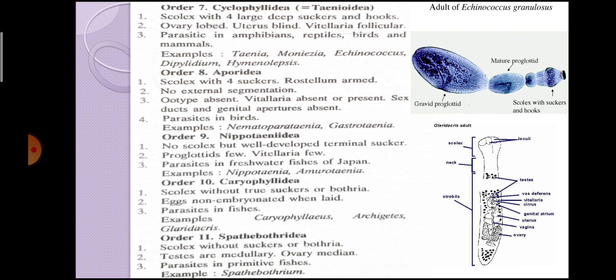Next order is Order Aporidia. Most parasites are found in birds — they are endoparasites in birds. Examples are Nematotaenia and Gastrotaenia.